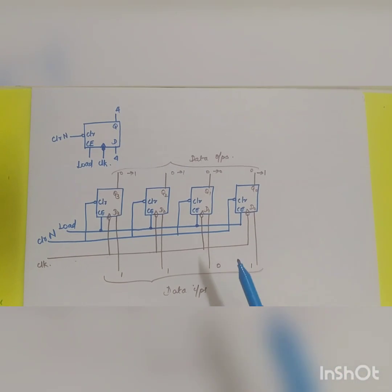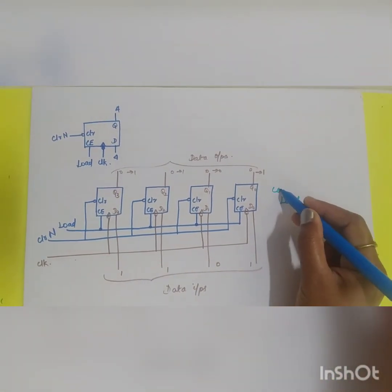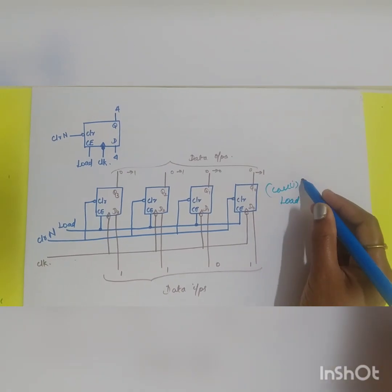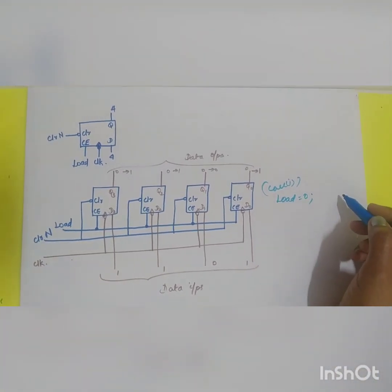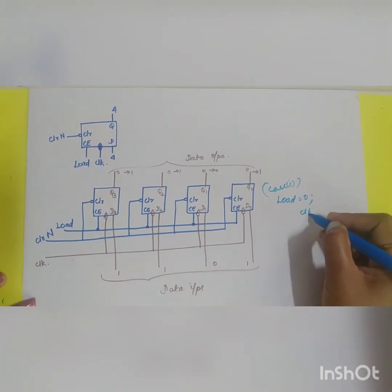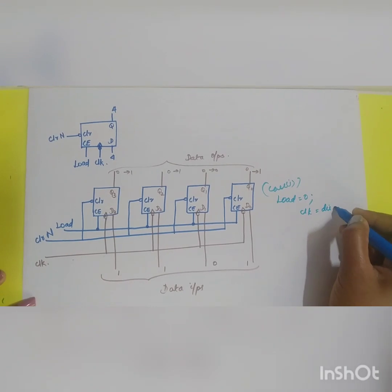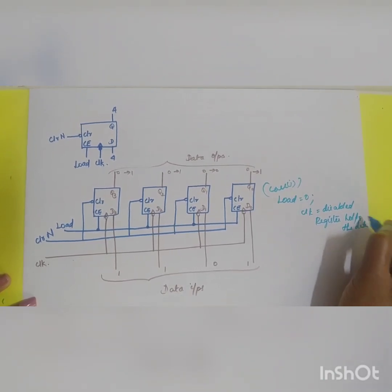Here also you have two conditions. Case 1: When load is equal to 0 what will happen? The register holds the data because the clock is disabled. The register holds the previous data.